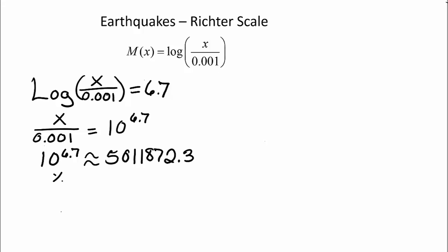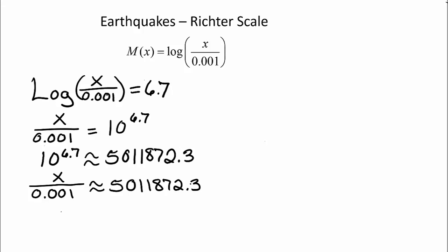Therefore, x over 0.001 approximately equals 5,011,872.3. To clear the fractions, we multiply both sides by 0.001, and we get x approximately equals 5011.87.